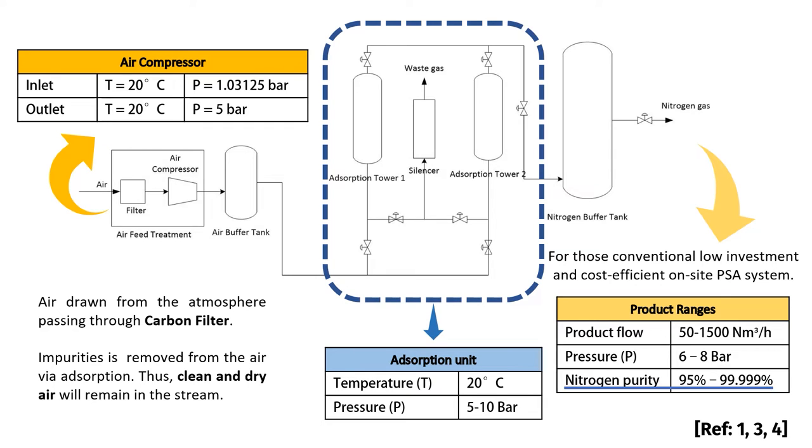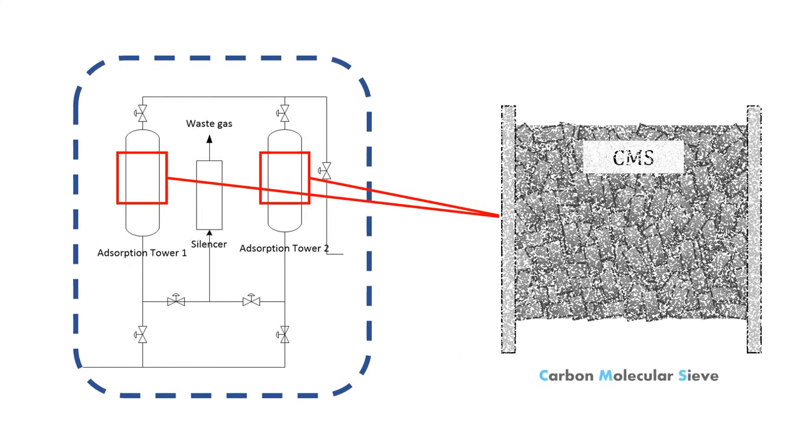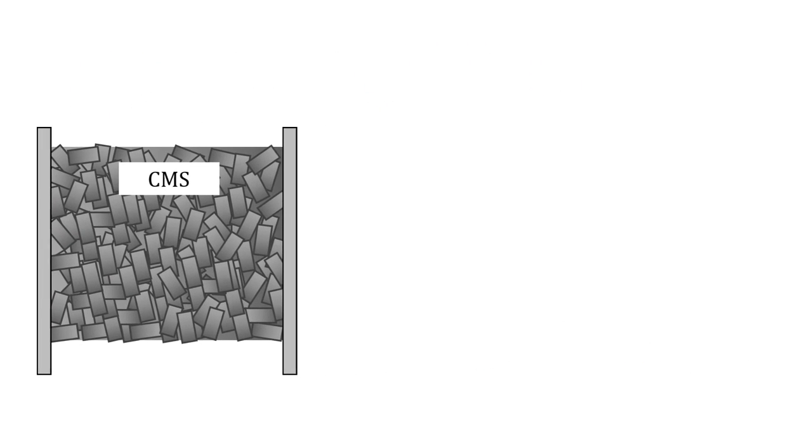The flow rate will directly affect the nitrogen purity. Hence, it is important to set the desired level of purity. Separation of air in the tower is totally dependent on this superior material called carbon molecular sieve.